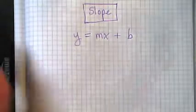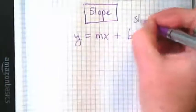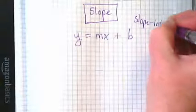This equation has a name. It is known as slope-intercept form.